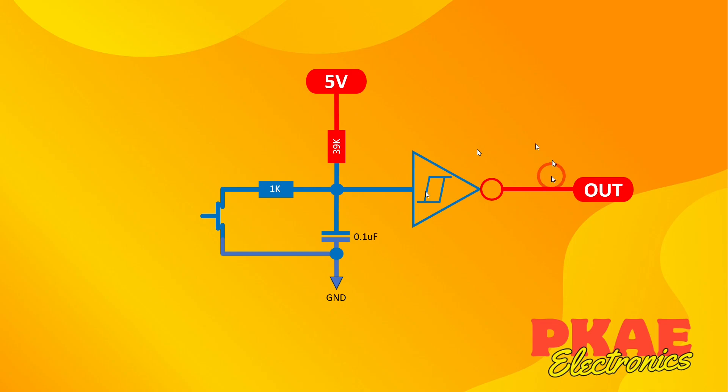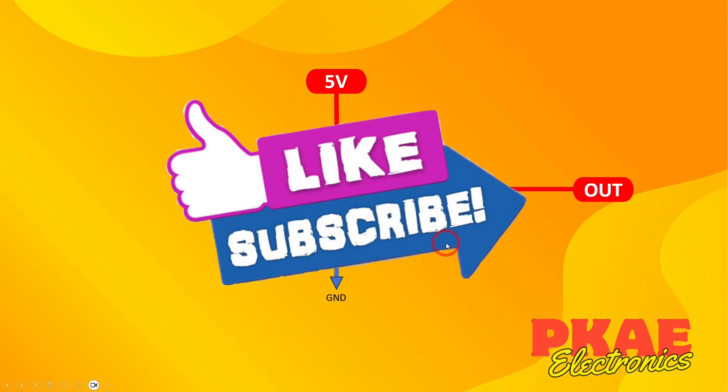That's how you can use Schmitt triggers to significantly improve and eliminate the bounce of your push-button switch, or relays, or any other kind of switch, and indeed, rotary encoders, because they are switching very rapidly for a mechanical or optical-type switch. I hope you liked this video, and if you did, then please click the like button, and if you haven't done so already, then please click subscribe. All right, catch you later.